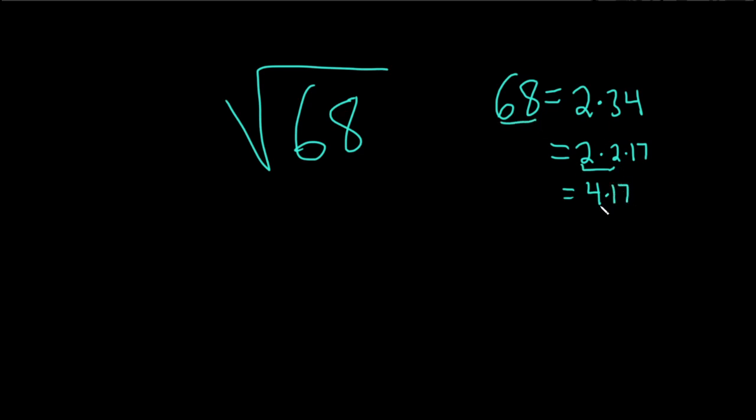So maybe you can go from here to here. My first instinct was 2 times 34. And then what can we do with 34? Oh, that's 2 times 17. Oh, look, we have 4.